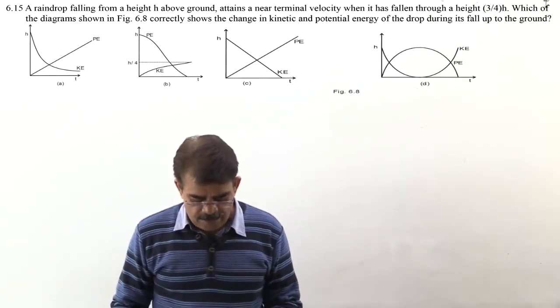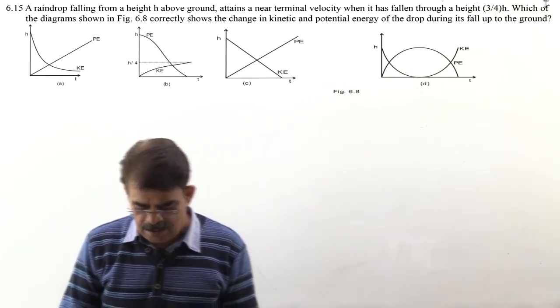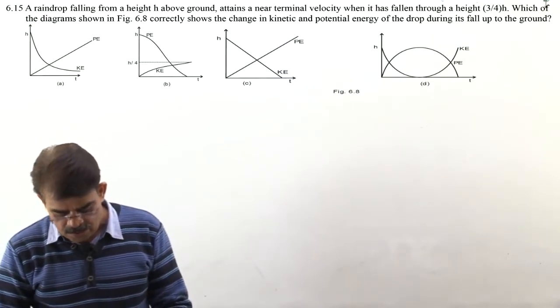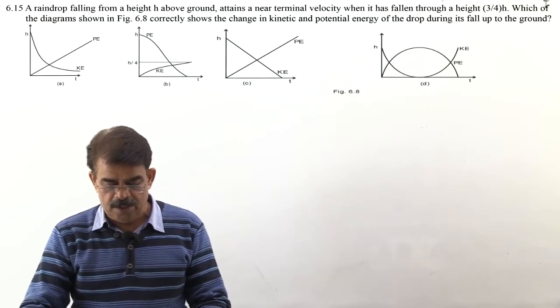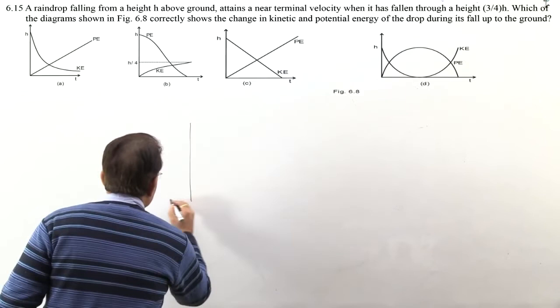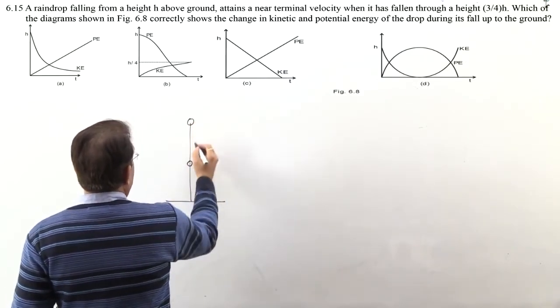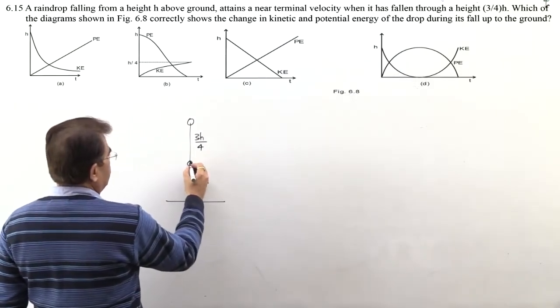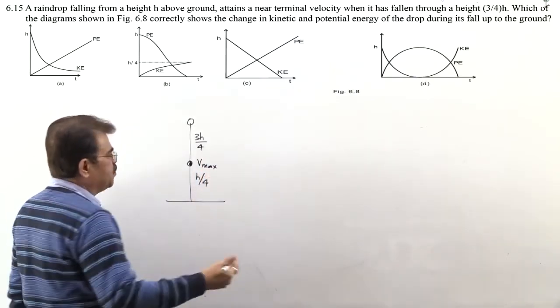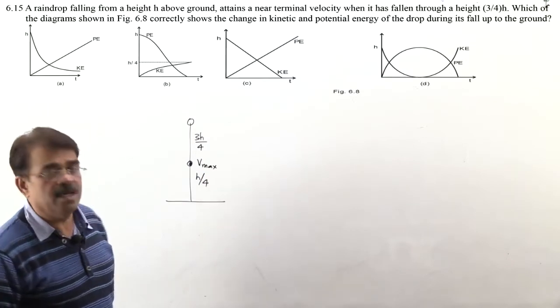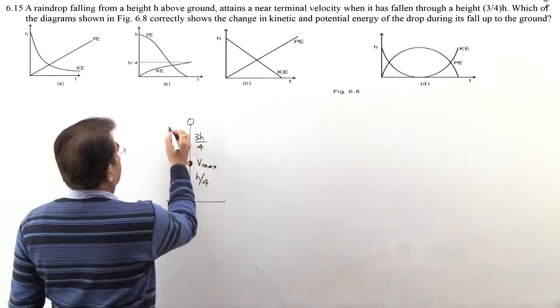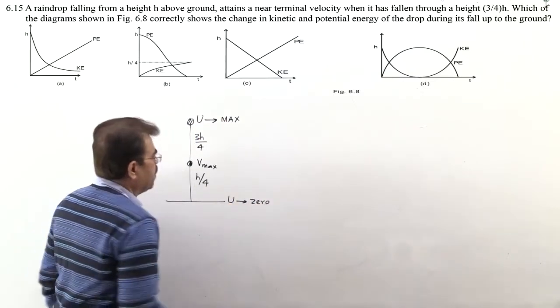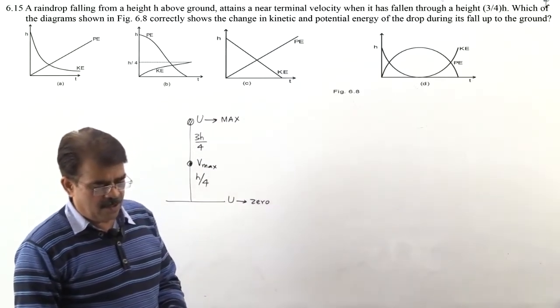Next question is 6.15, graphical question. A raindrop falling from height h above ground attains near terminal velocity when it has fallen through height 3h by 4. Which diagram correctly shows the change in kinetic and potential energy of drop during fall up to ground. From what height is raindrop falling? h height. When it drops 3h by 4, meaning how high from ground? h by 4. Then its velocity is terminal velocity. That means at h by 4 its velocity becomes maximum, increases then becomes constant - terminal. Maximum then constant at h by 4 height. And at h height when raindrop is there, its potential energy is maximum, and on reaching ground, potential energy becomes 0.